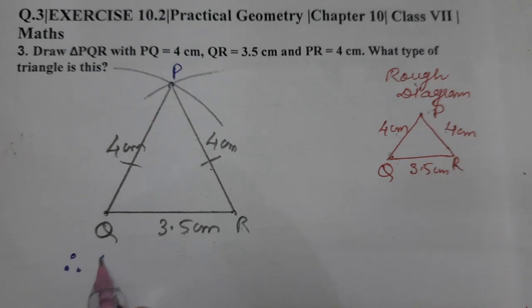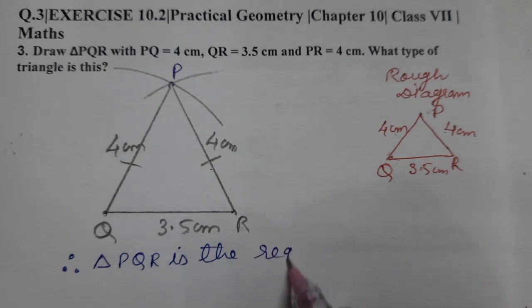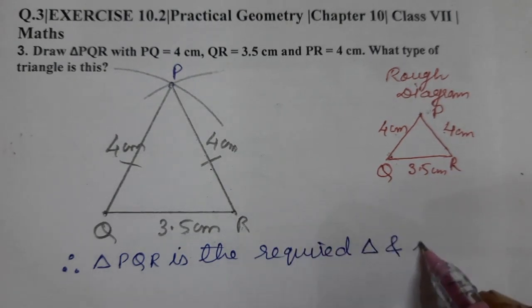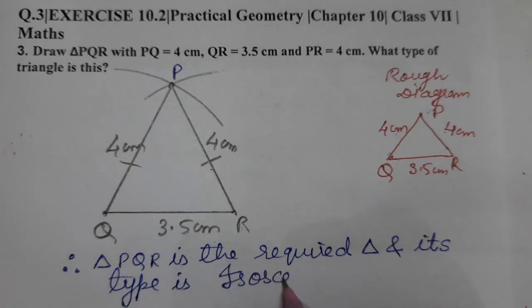Therefore, triangle PQR is the required triangle. I hope you understood question number 3. Thank you so much for watching the video.